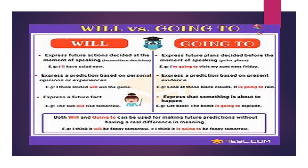To conclude: 'Will' expresses future actions decided at the moment of speaking — like 'I'll have salad' decided right now. It also expresses a prediction based on personal opinion or experience without evidence — like 'I think United will win the game.' Or it expresses a future fact — 'The sun will rise tomorrow.'